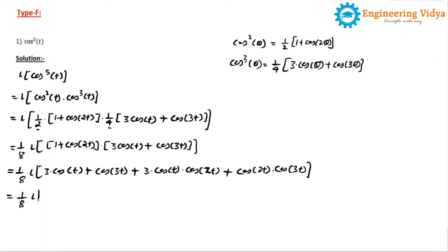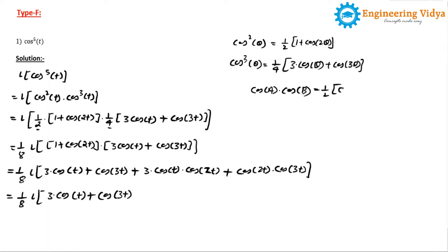Now we apply the Laplace transform. For the product terms, we apply the defactorization formula: cos(a)·cos(b) = (1/2)[cos(a − b) + cos(a + b)].